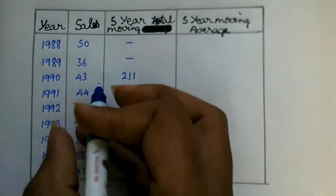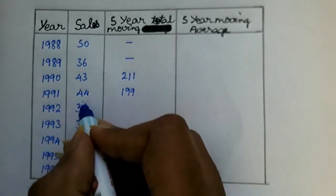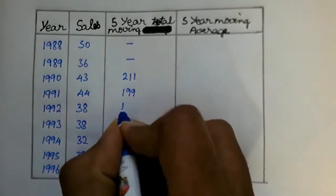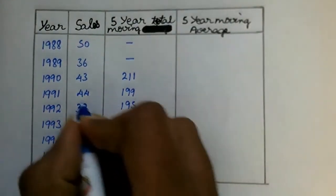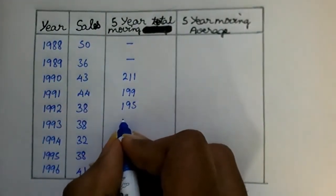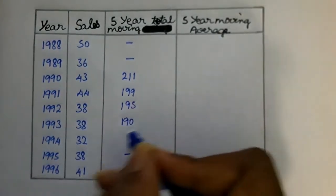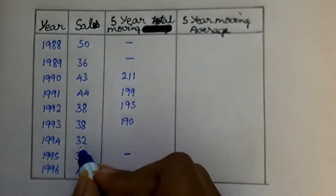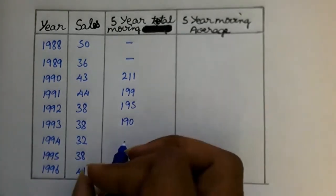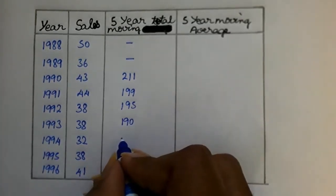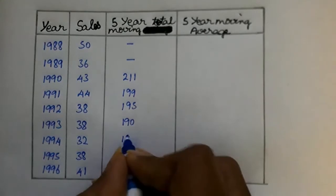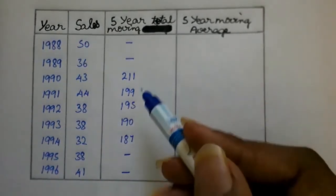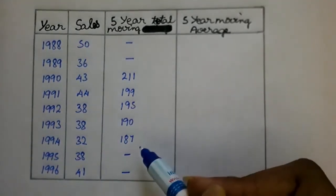The first 5-year total is 211. The next group — 43, 44, 38, 38, 32 — gives 195. The following group gives 190. The last 5 values — 30, 30, 32, 38, 41 — give 187. These are the 5-year moving totals.